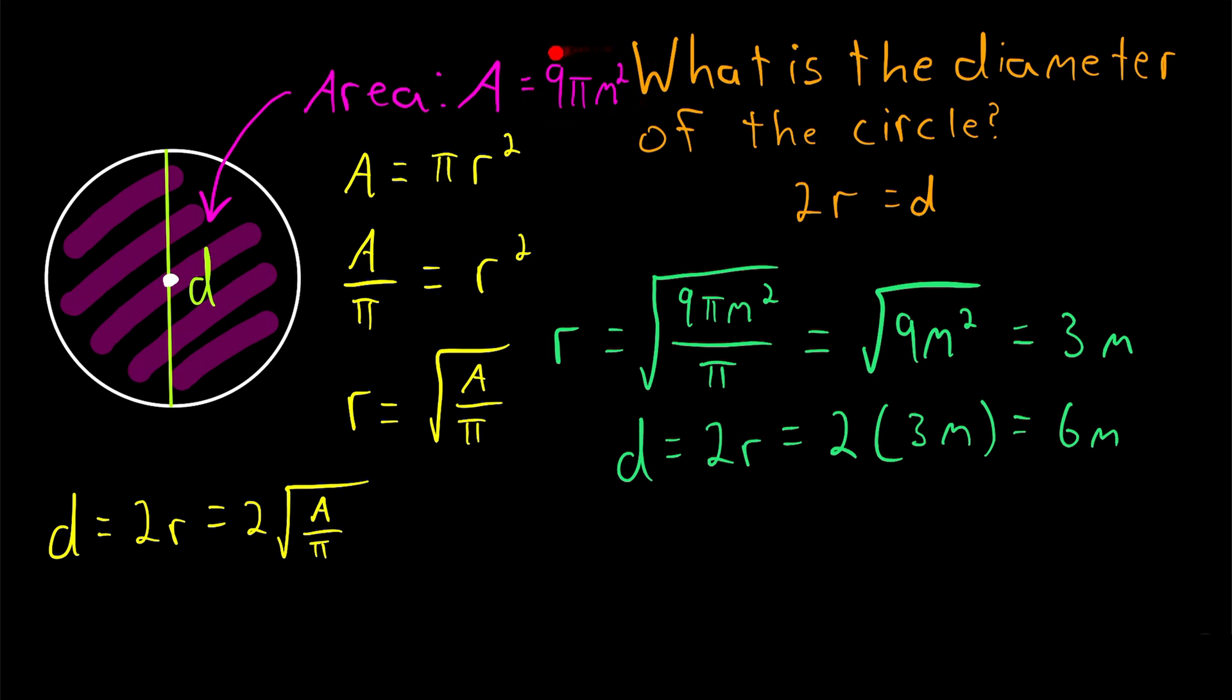Of course, you won't always have a nice area that's a multiple of pi, so your diameter isn't always going to be a nice round number like 6 meters. You might have to round, or you might just leave your answer in terms of a square root. But that's how you do it.